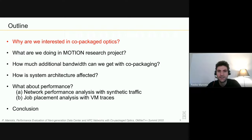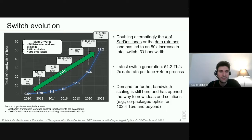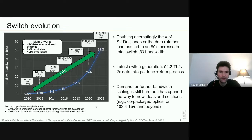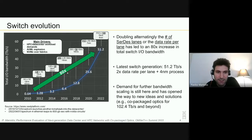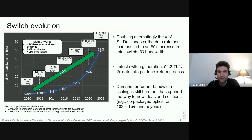Why are we interested in co-packaged optics? In this graph you can see the total IO bandwidth we can get from a switch versus time, starting from 2010 — 12 years back — all the way up to 2022. Over the span of 12 years we have an 80x improvement in total IO bandwidth. In 2010 we had less than one terabps per switch; now we are at 51.2 terabps.